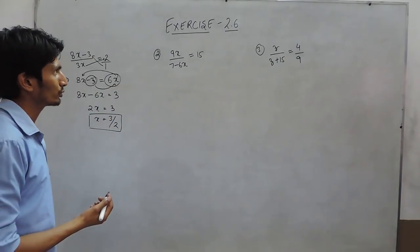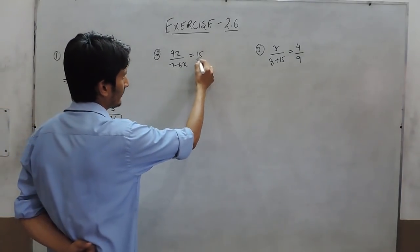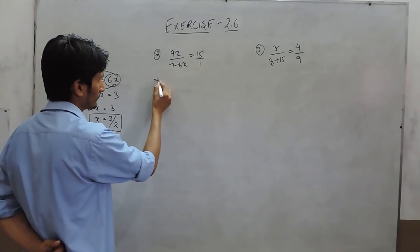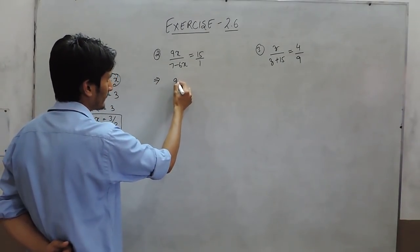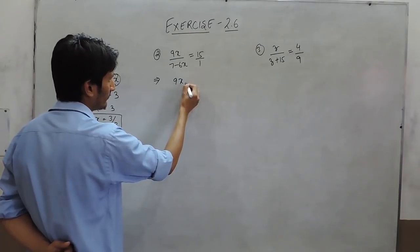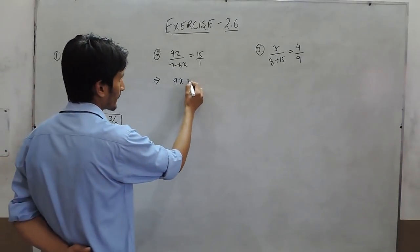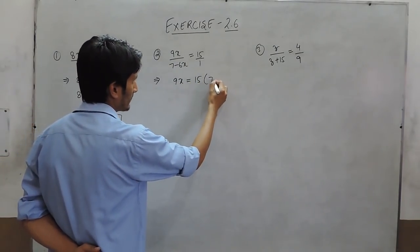To solve question number second, again we have to cross multiply it. When this is multiplied by 9 it will become 9x. And 15 when multiplied by 7.